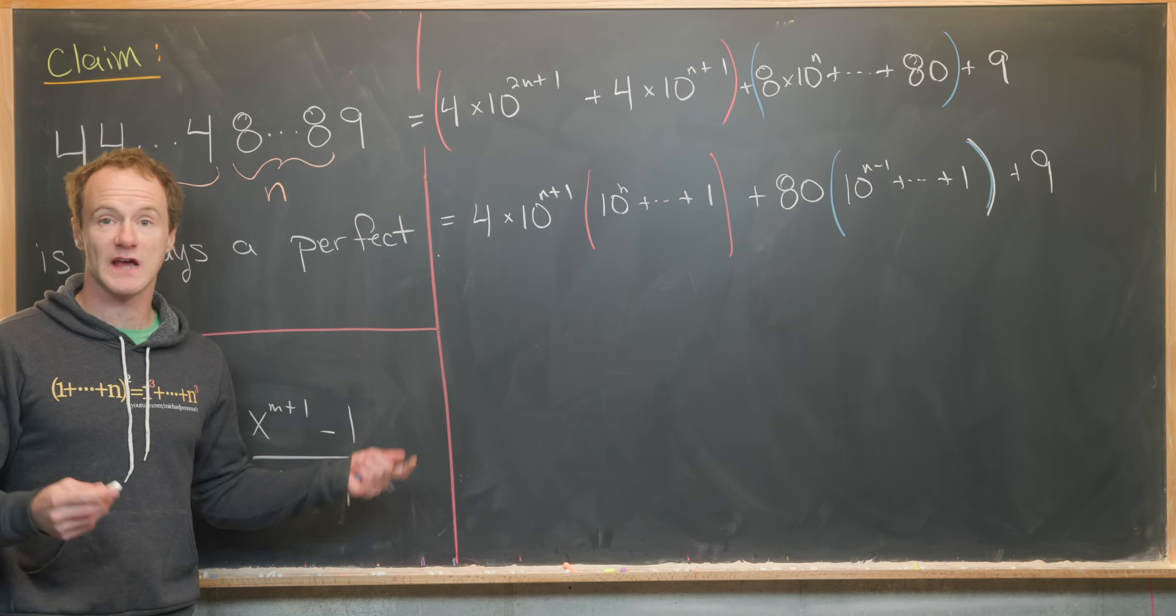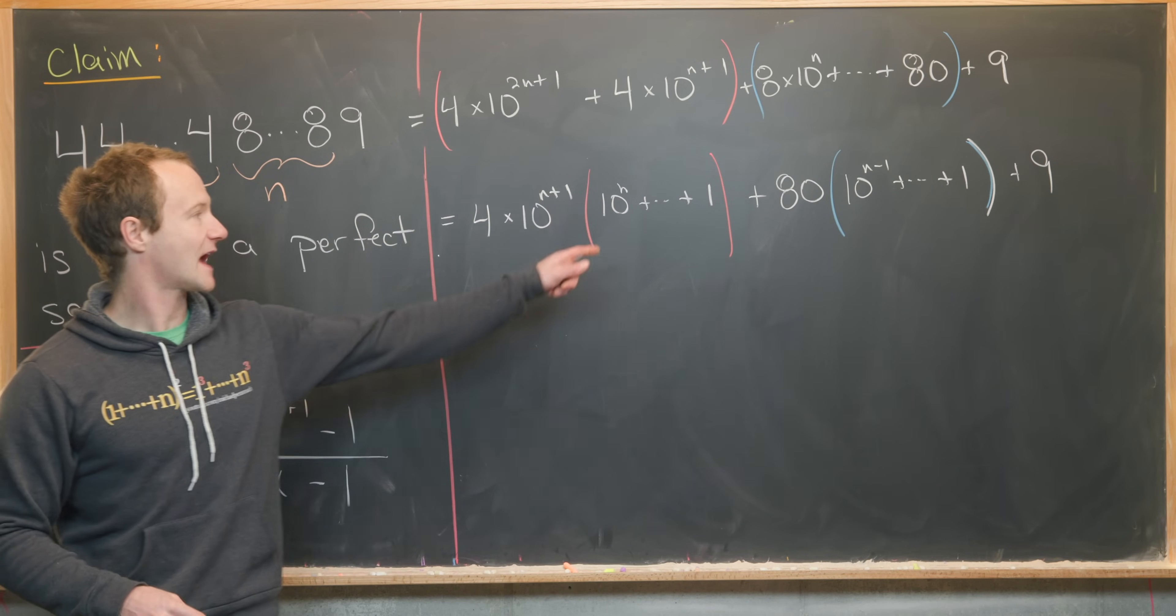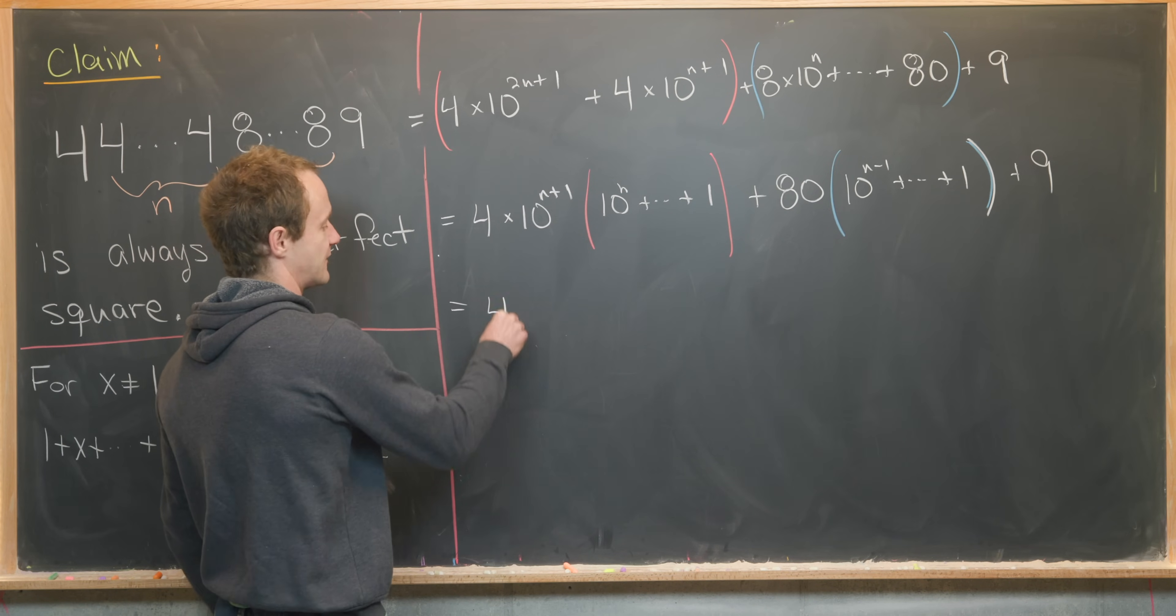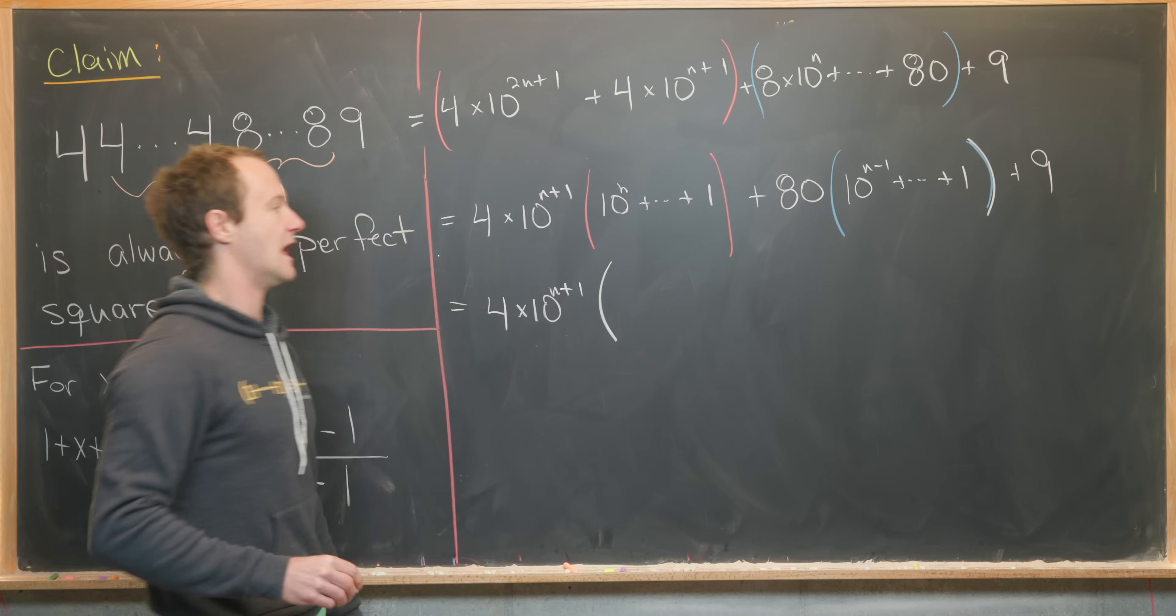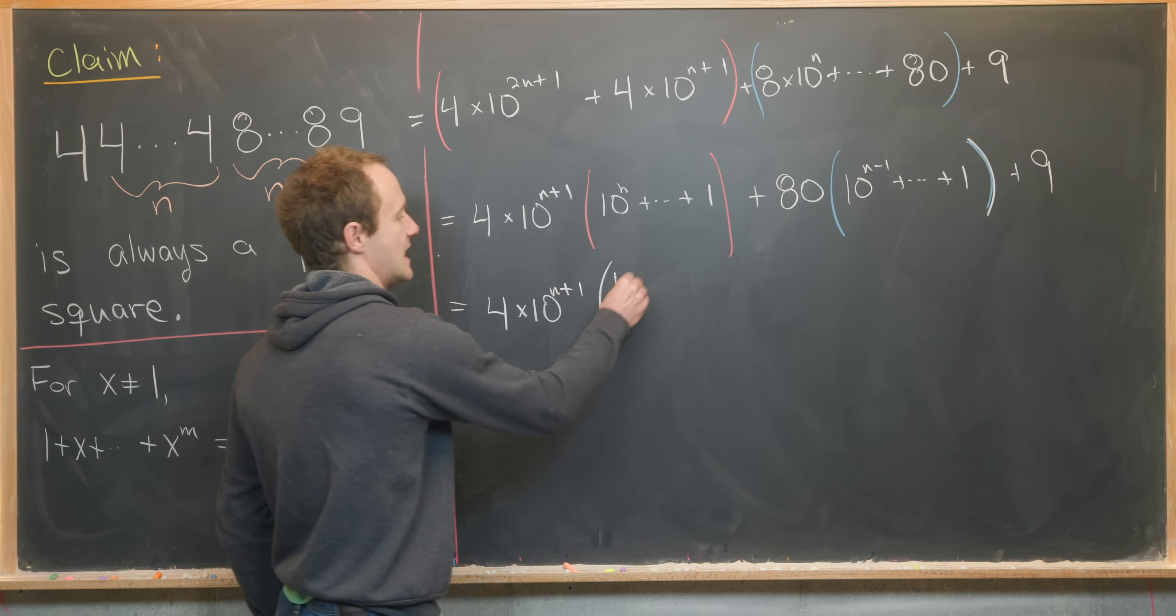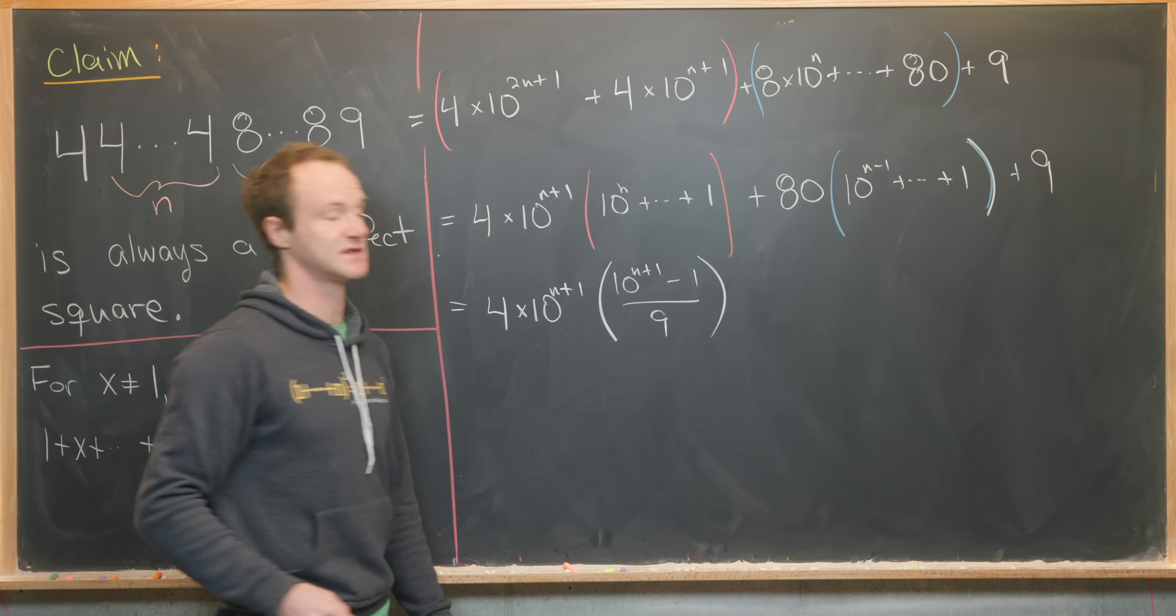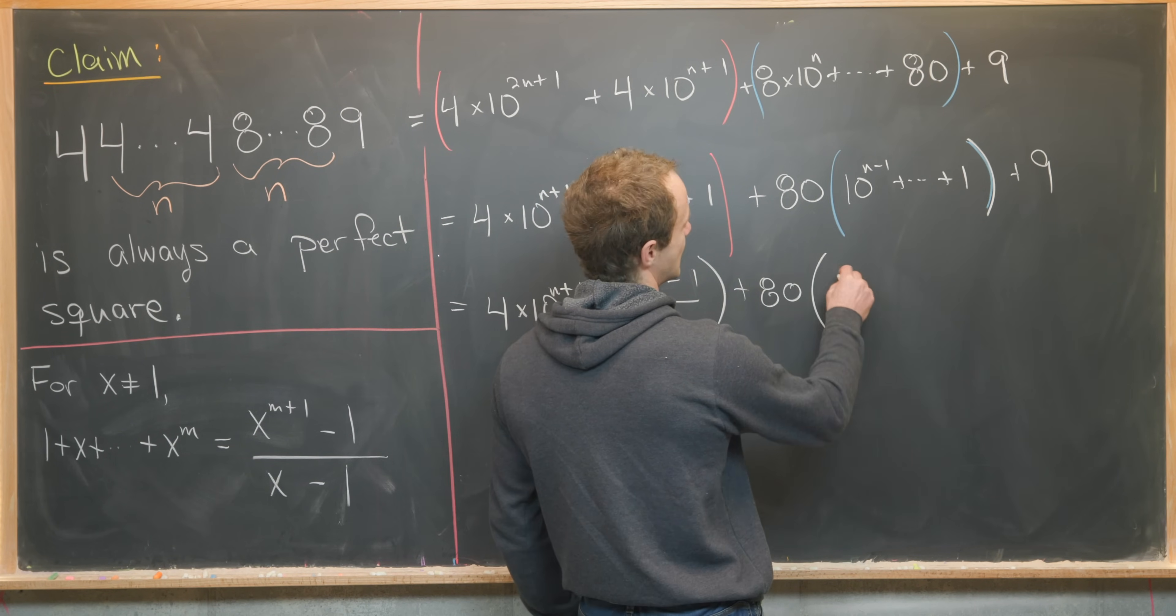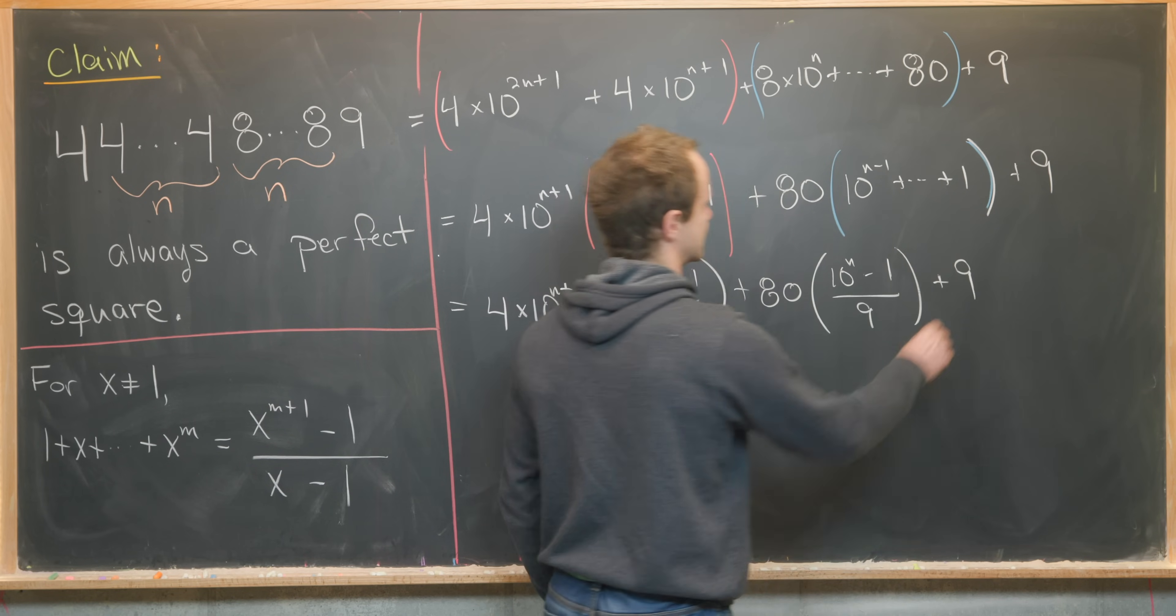Next, we'll use our formula for the finite geometric series like we derived over here, but with x equal 10 in each of these cases. So that's going to leave us with 4 times 10 to the n plus 1. And then here we'll have 10 to the n plus 1 minus 1 over 10 minus 1, which is 9. And then here we'll have plus 80. And then 10 to the n minus 1 over 9 plus 9.